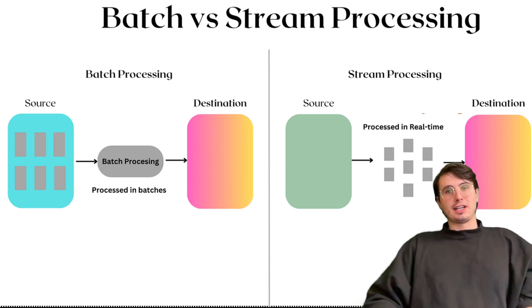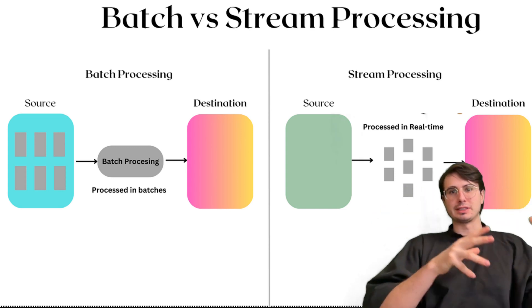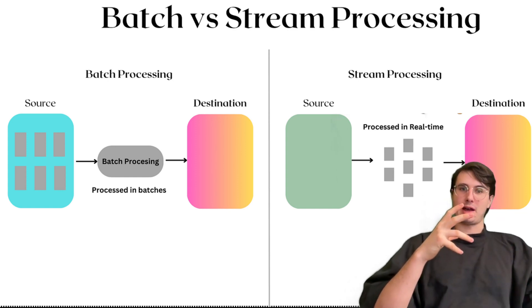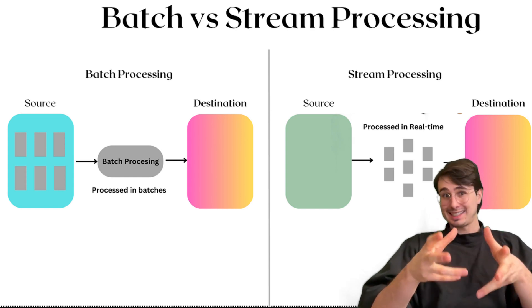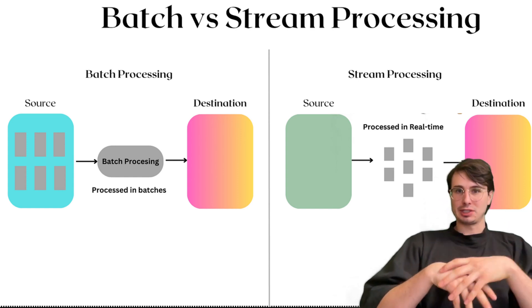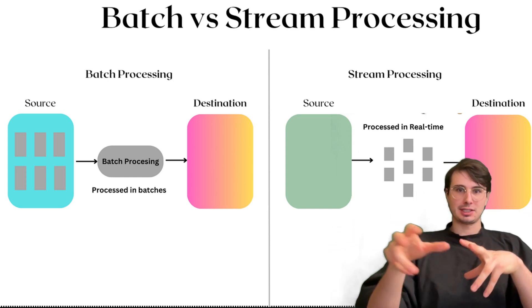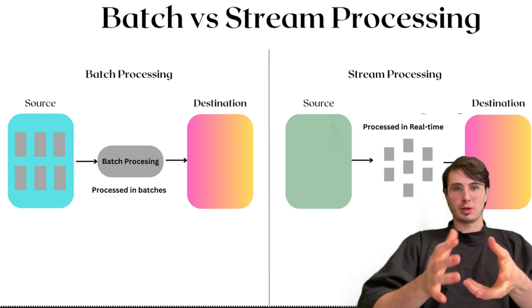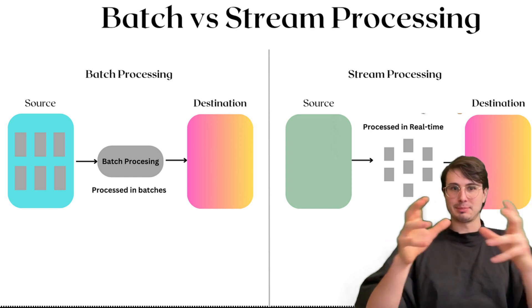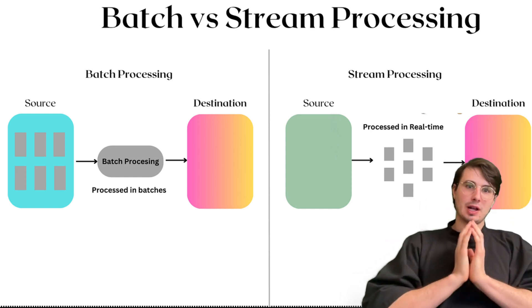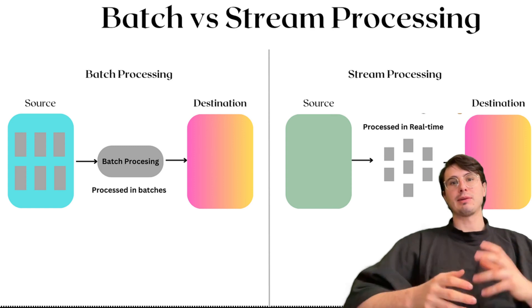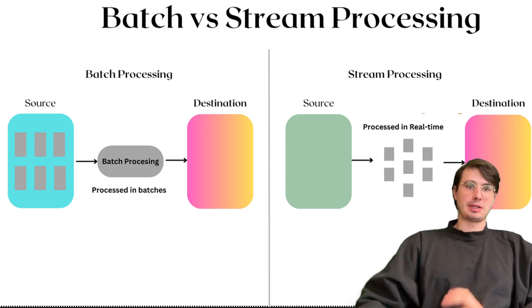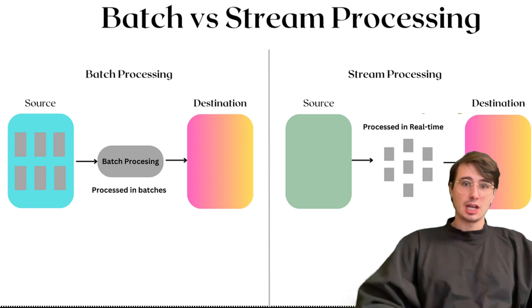Another question especially pertinent today is: what are the trade-offs between batch and streaming data pipelines? This is really about understanding how you think about processing data and what you lean towards — some organizations lean more towards batch, some more towards streaming. You want to give your framework for comparing latency, complexity, and use cases, and talk about the requirements that would dictate which one is best for which use case.